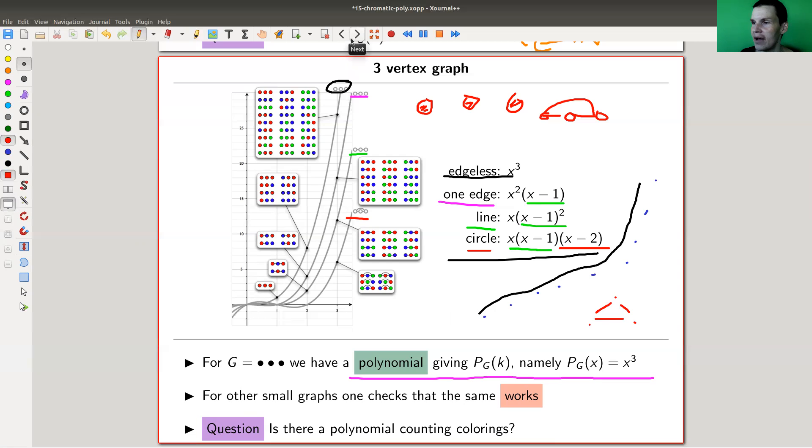And this was defined roughly in 1910, hoping to prove the four color theorem, because for the four color theorem, so what you would need to do is you would need to show that for a planar graph G, PG of four is non-zero, right? So four is not a root of that polynomial. Then it would be done.